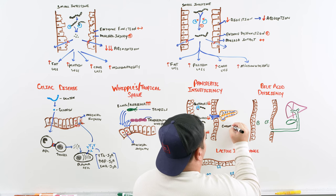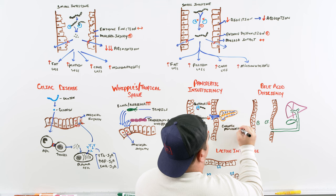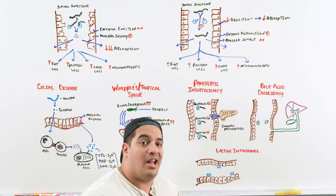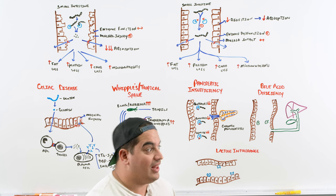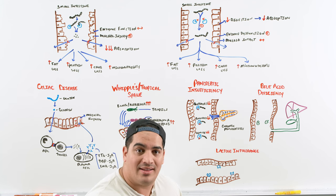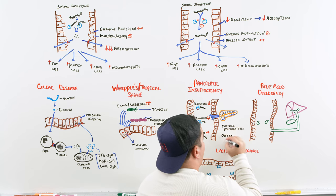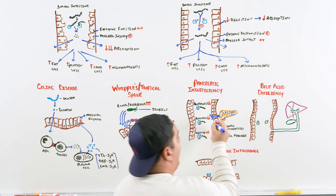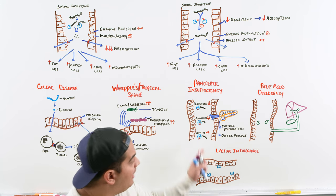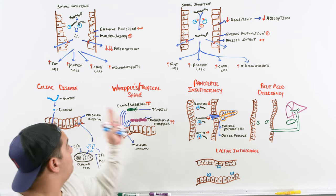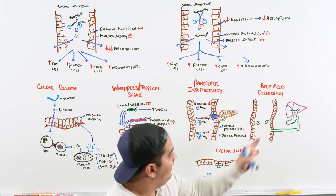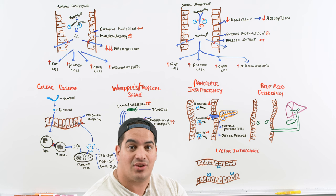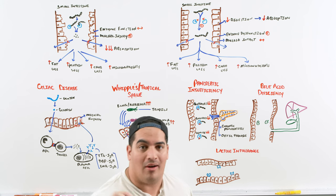The primary causes of pancreatic enzyme deficiency are chronic pancreatitis — look for chronic alcohol use as a common cause — and cystic fibrosis, especially in younger patients with a history of frequent pulmonary infections or meconium aspiration. Both lead to chronic pancreatic fibrosis, decreased enzymatic production, and global malabsorption — meaning patients lose proteins, fats, carbohydrates, and micronutrients.